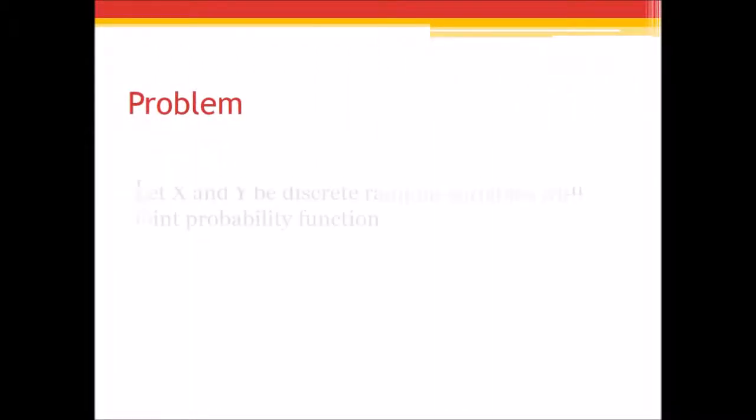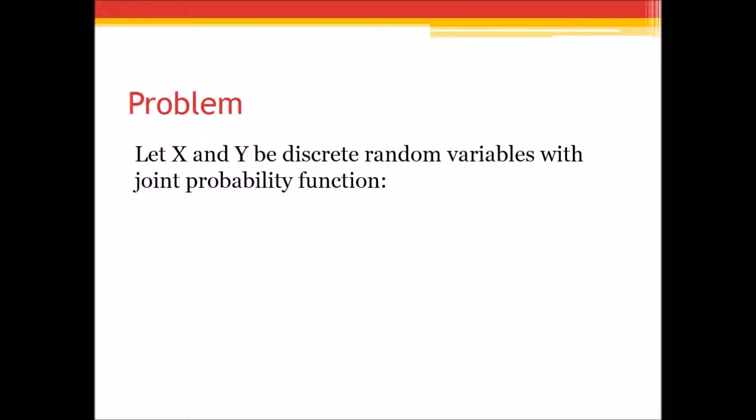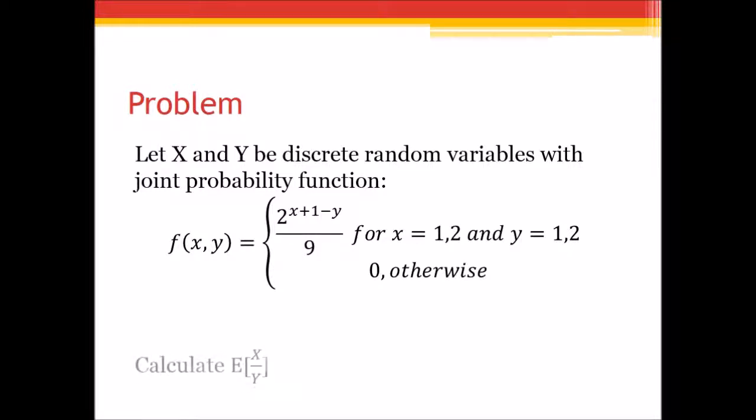Now let's take another problem. We're going to let x and y be discrete random variables with the joint probability function 2 to the power of x plus 1 minus y over 9, where x is 1 and 2 and y is 1 and 2, and it's 0 otherwise. We are asked to calculate the expected value of x over y. Take a look at this, try and do it on your own, and I'm going to begin doing it right now.